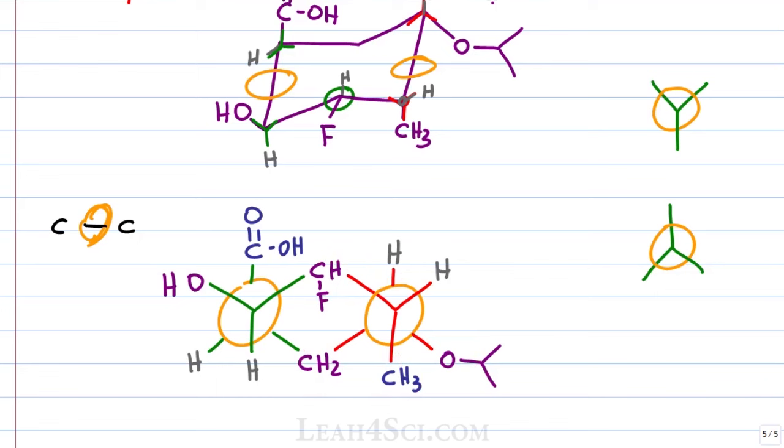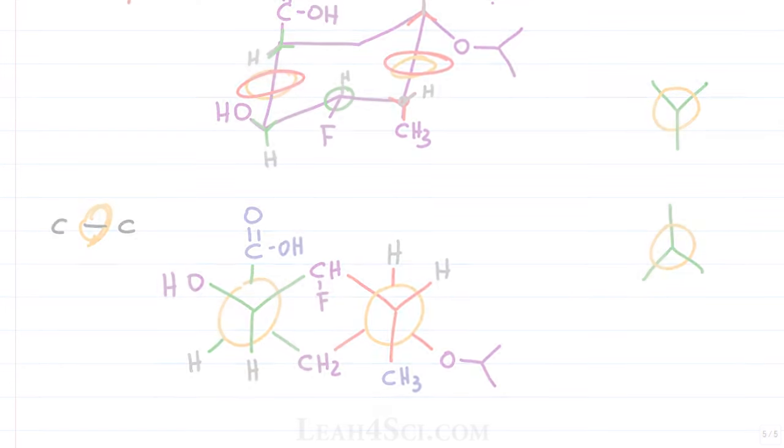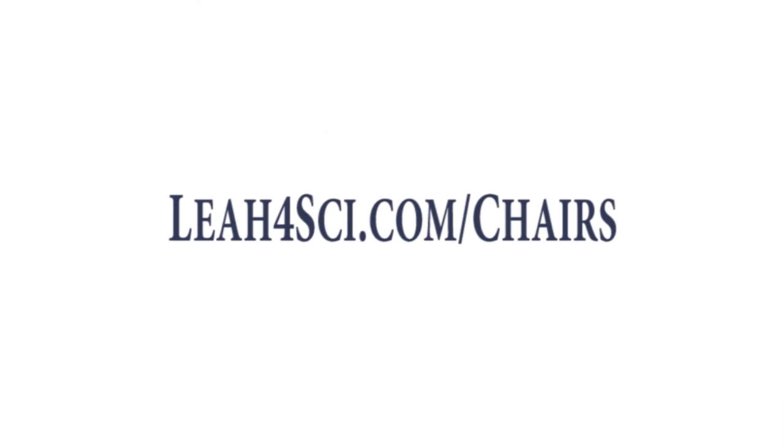To summarize, the trick here is to imagine grabbing the model kit here and here, figuring out if your carbons have the Y or upside down Y and then superimposing all of your substituents. Make sure you try the rest of the quiz on my website leah4sci.com/chairs.